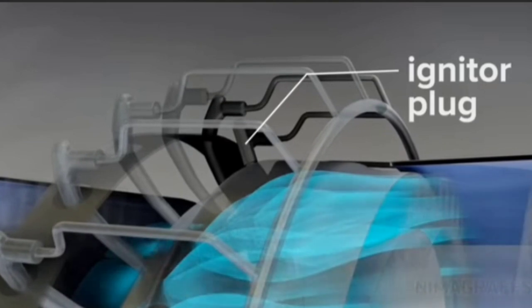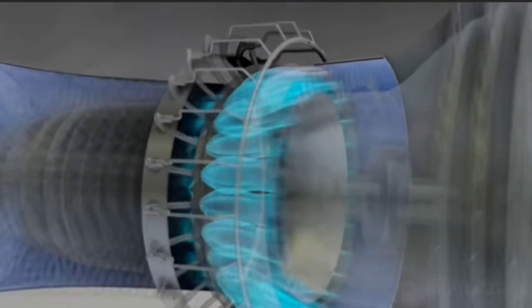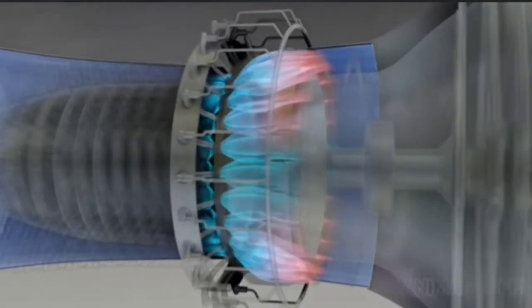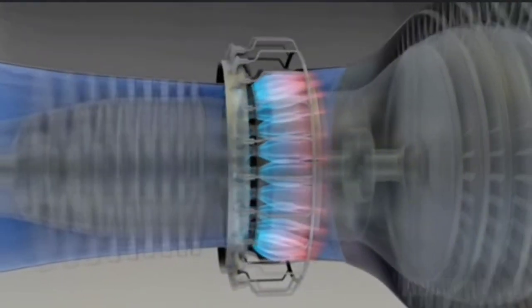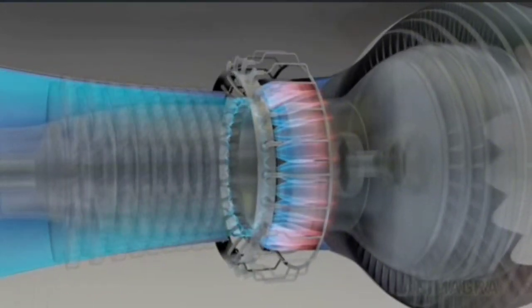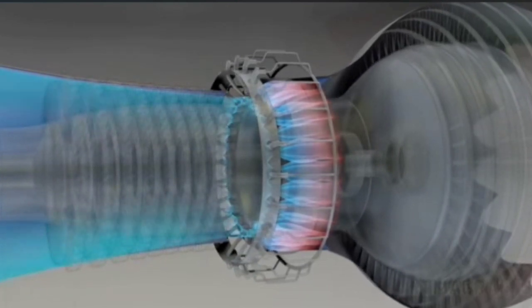A couple of igniter plugs, not unlike the spark plugs found in car engines, ignite this mixture and the reaction spreads evenly around the ring. Once started, combustion continues as long as air and fuel are supplied.